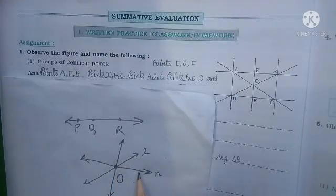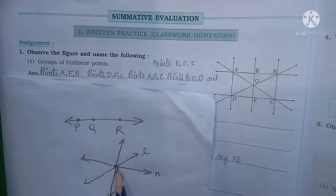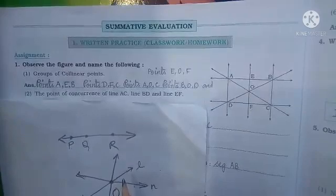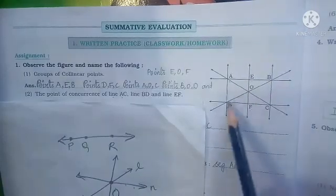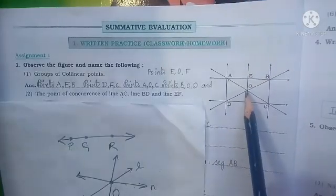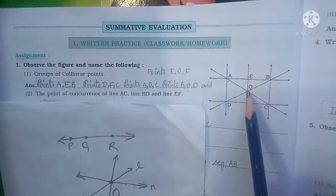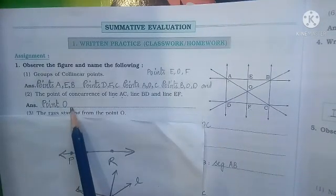Keep in mind that when three lines intersect each other at one point, that point is your point of concurrence and those lines are your concurrent lines. Now finding the answer from the figure: the first, second, and third lines are all intersecting each other at one point, and the name of that point is O as given in the figure. So the point of concurrence for this question is point O.